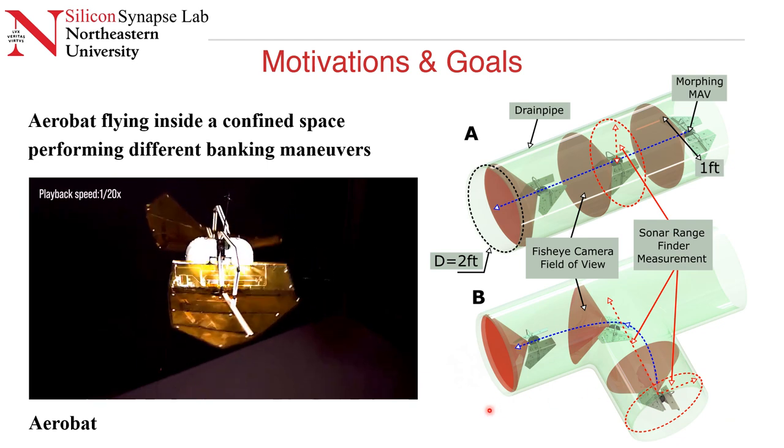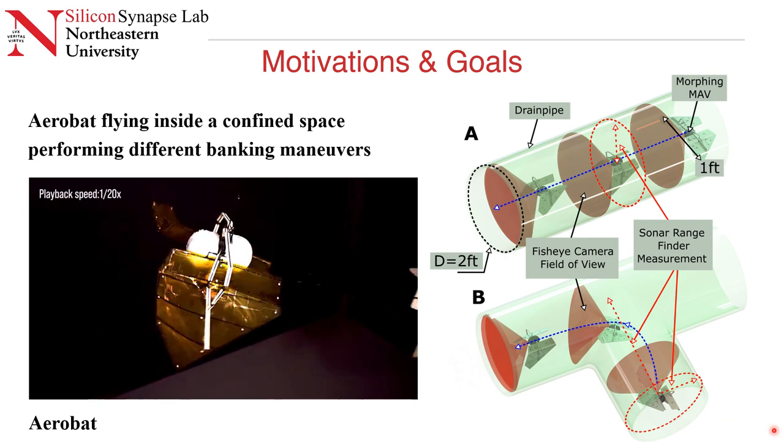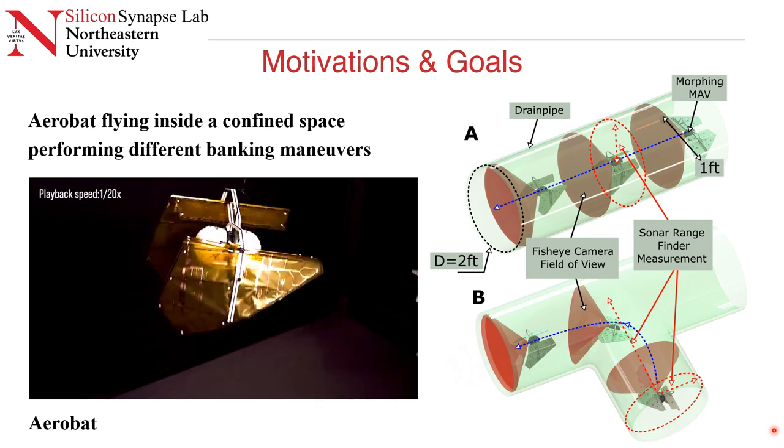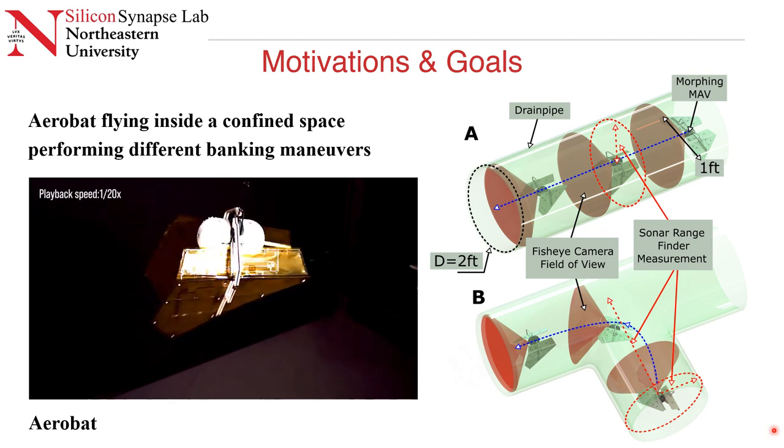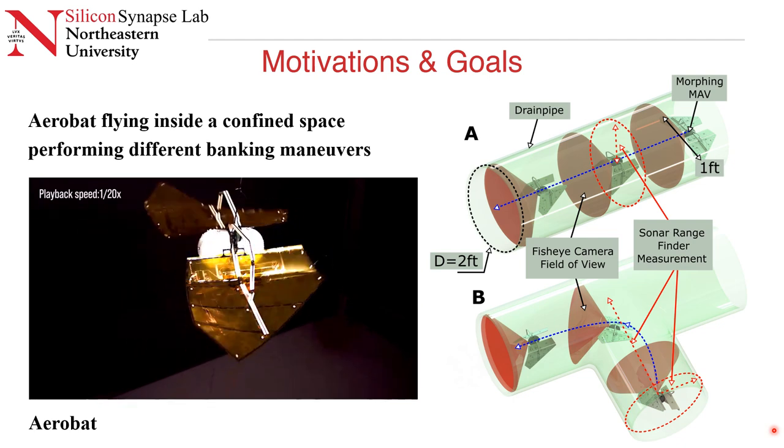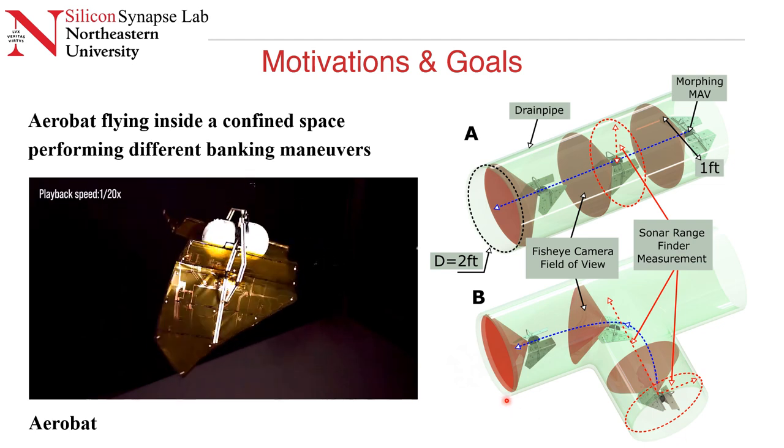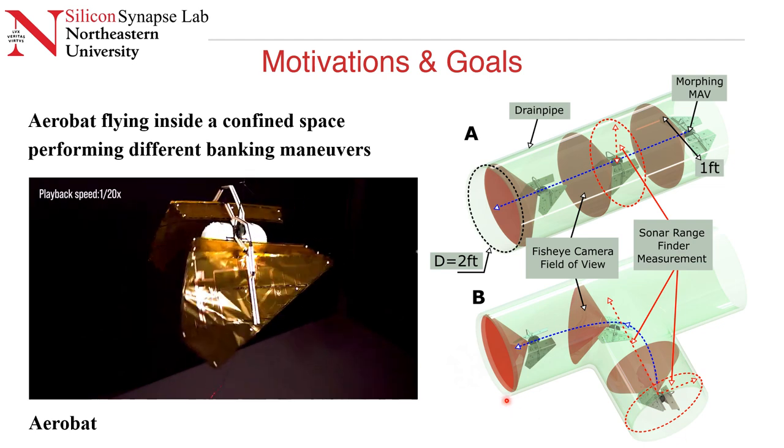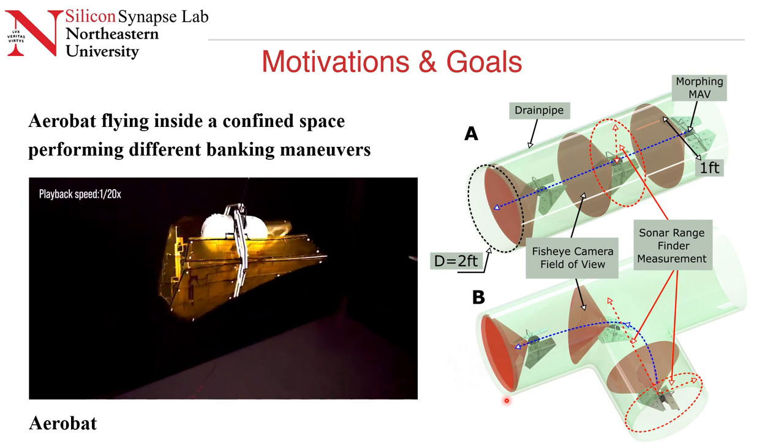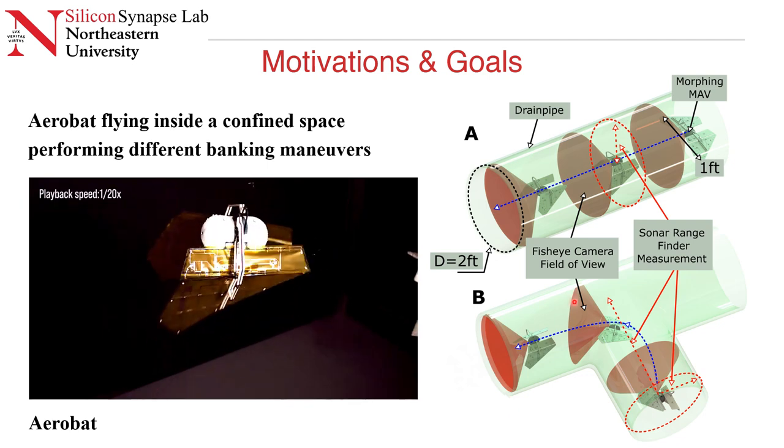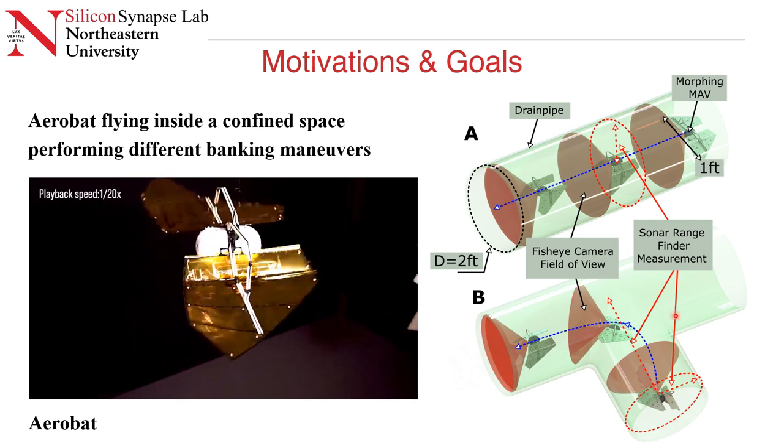The goal for this aerobat is to fly inside confined spaces like tunnels and perform different maneuvers. This robot has just one motor that only controls the symmetric fashion flapping, and it lacks any other mechanism for orientation control. To perform any maneuvers, the aerobat requires some sort of orientation control to follow some trajectory or to make banking turns.